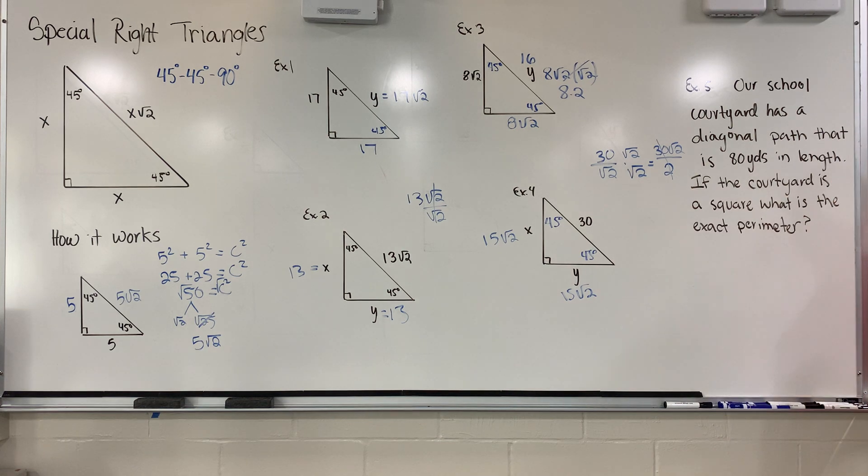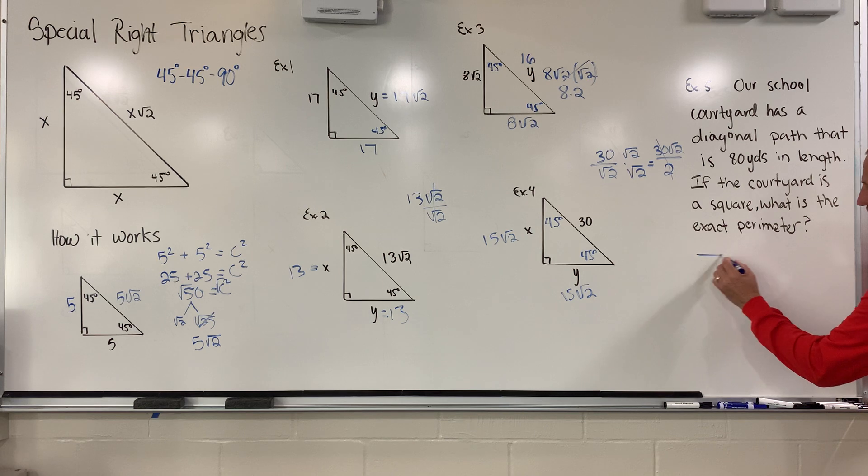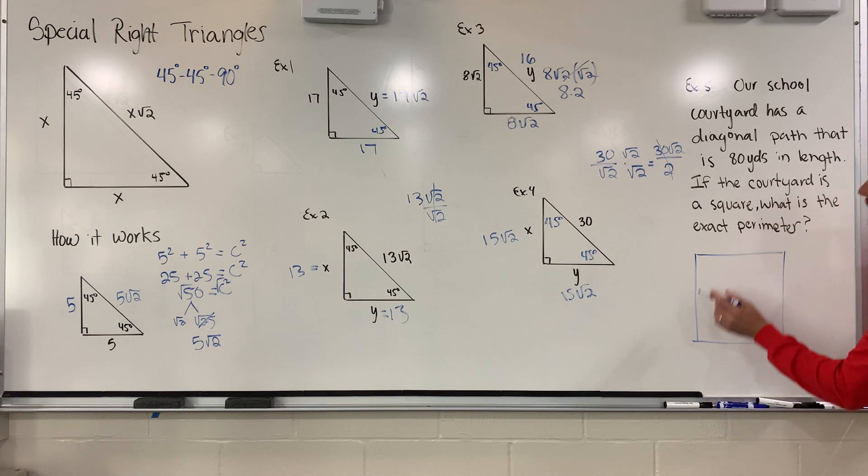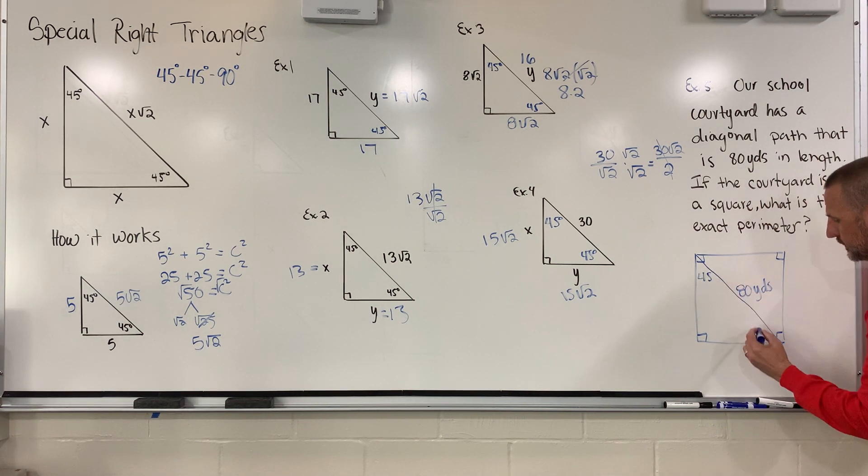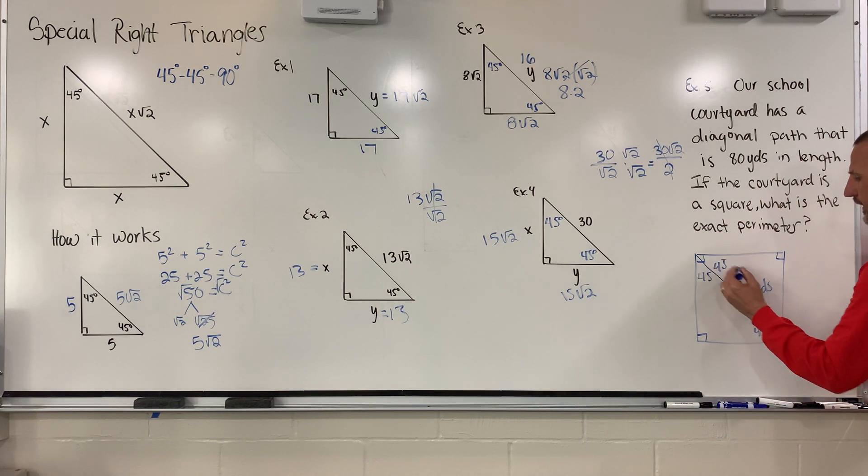The last one I want to do here is, our school courtyard has a diagonal path that is 80 yards in length. If the courtyard is a square, what is the exact perimeter? So I'm going to use our Viking pride that we use at school. I'm going to pinpoint what they're looking for, go ahead and record some information and illustrate, do it, and examine it. First thing I'm going to do, I'm going to draw a courtyard, and I know that it's a square. And they're saying that here there's a diagonal, better make it an actual square. There's a diagonal path that is 80 yards long. I should recognize that when I make a diagonal, I have taken that square courtyard and made 45 degree triangles.